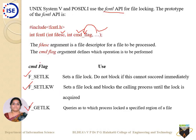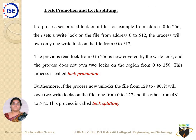fcntl returns an int: zero on success and minus one on failure, which can occur if you misuse the type of arguments specified. Now let us cover two important terminologies related to file and record locking: lock promotion and lock splitting.